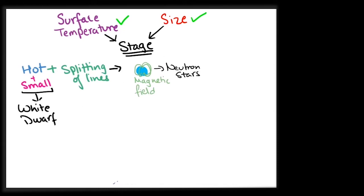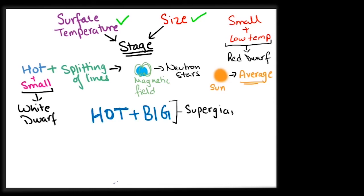A small star with less surface temperature is a red dwarf. Sun is a star with average size and average temperature. Stars with very hot surfaces and giant sizes are blue giants and blue super giants.